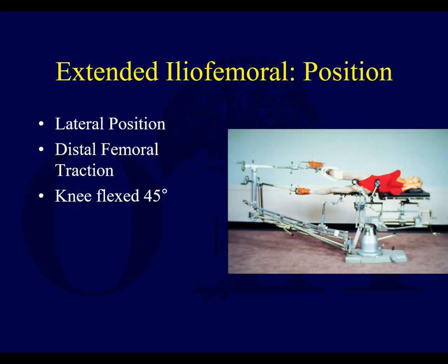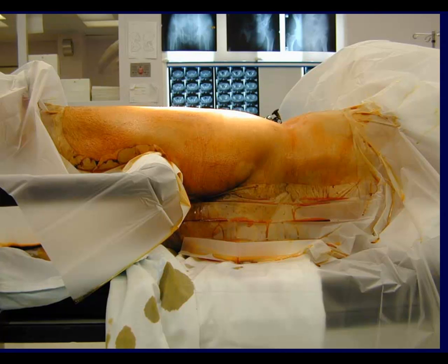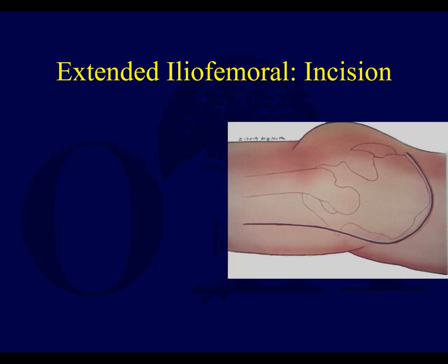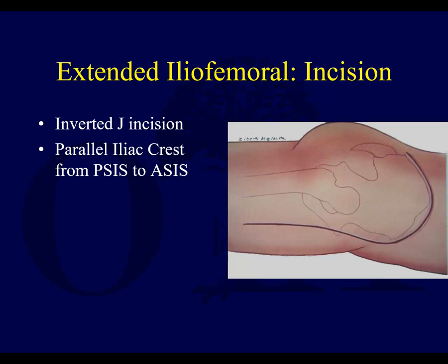You place the patient in the lateral position for this. On a traction table you would position it this way, but you can also do this on a radiolucent table. The approach is an inverted J incision — sort of like an upside-down J or candy cane. There are some modifications of this, but we'll stick with the classic lateral approach.